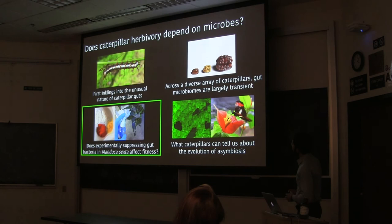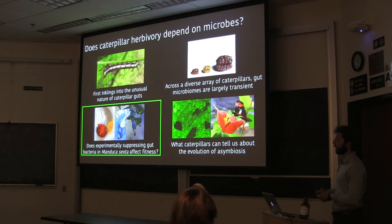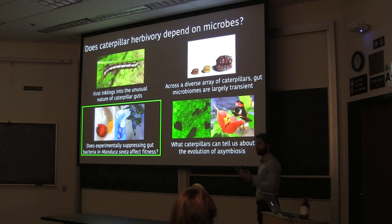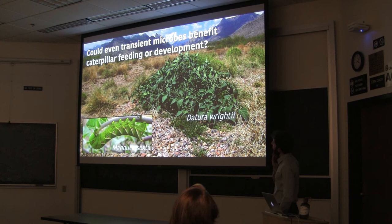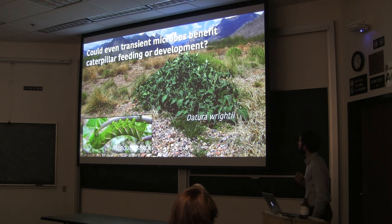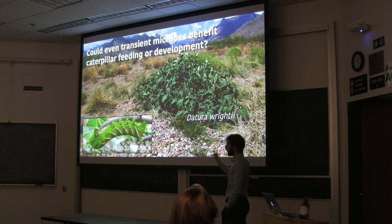Across this diverse suite of caterpillars, gut microbiomes fit better with the transient model: microbes pass through from the diet, are not colonizing, and are potentially not doing anything. But those are observational data. To really address the question directly, it would be useful to do an experiment manipulating gut bacteria and then measuring fitness outcomes. The experiment was designed to test whether even transient microbes have some cryptic beneficial role in caterpillar biology.